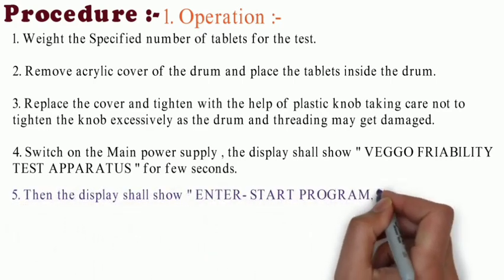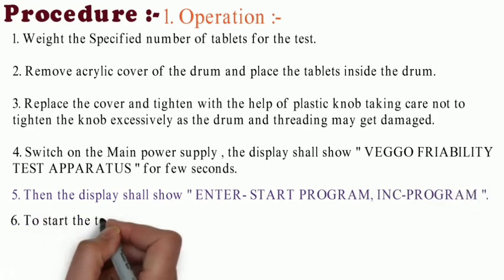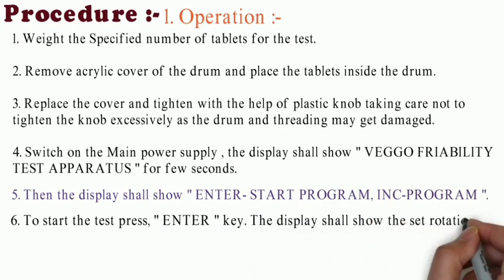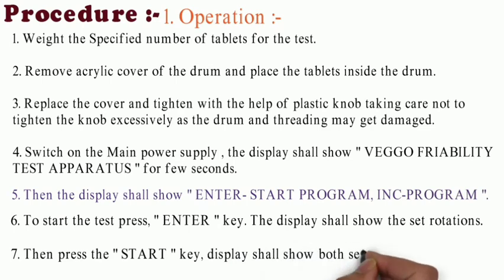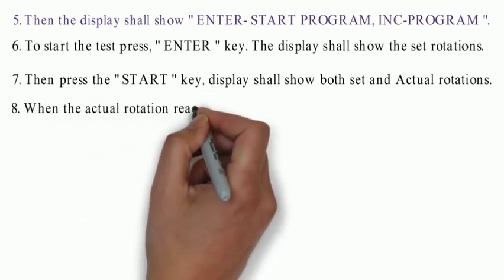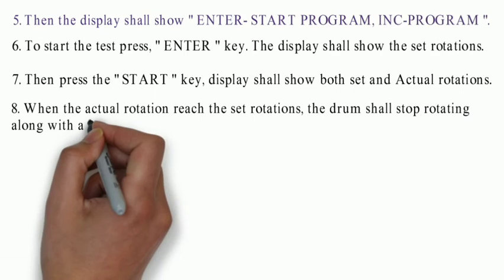Switch on main power supply and display shall show Veggo Friability Test Apparatus for few seconds. Then display shall show Enter Start Programming. Press Enter to start the test. Press Enter key, the display shall show Set Rotation. Then press Start key. Display shall show both set and actual rotation.